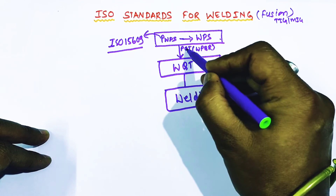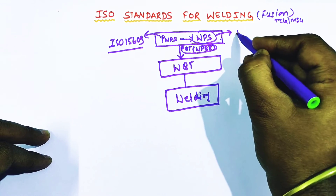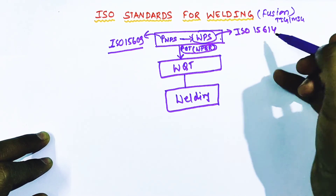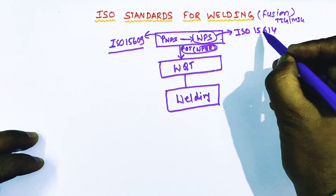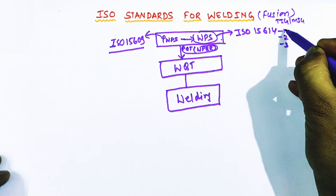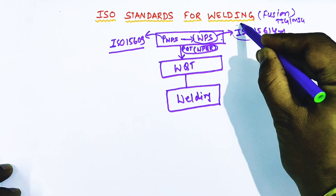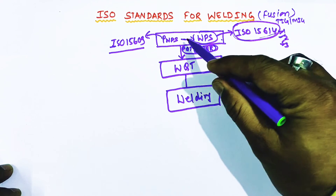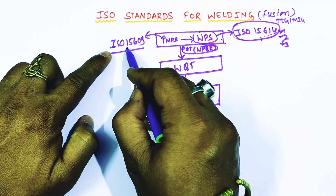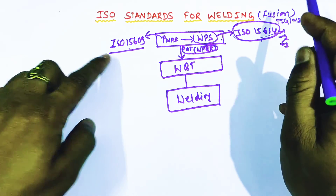For qualification of the preliminary WPS and finalization of the WPS, we have ISO 15614. In ISO, there is a series under 15614 — such as 15614-1, 15614-2, 15614-3 — where each sub-part covers a particular welding process or particular steels. So at this stage, two codes are important: ISO 15609 for the preliminary WPS, and ISO 15614 for qualification of the PWPS.